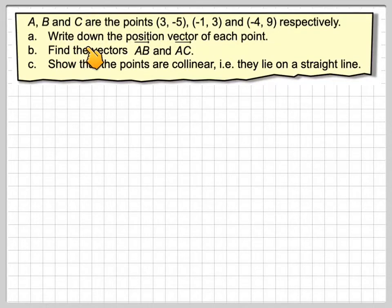A, B, and C are the points (3, -5), (-1, 3), and (-4, 9) respectively. Write down the position vector of each point, find the vectors AB and AC, and show that the points are collinear, i.e. they lie on a straight line.